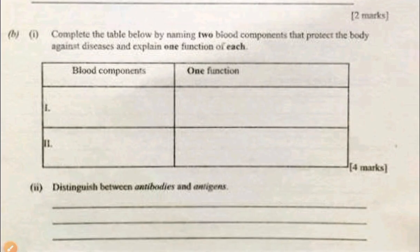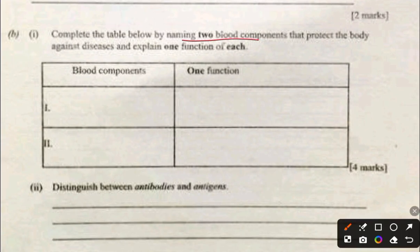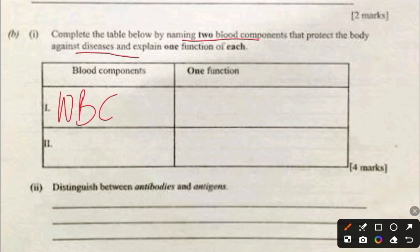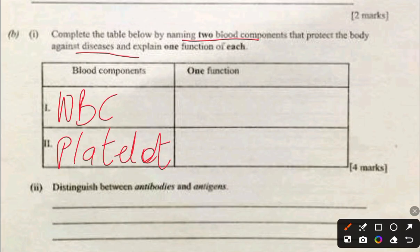Two blood components that protect the body against diseases: white blood cells (WBCs) are part of the immune system and fight biological agents by engulfing them and producing antibodies to neutralize them. Platelets also help prevent disease — when there is a cut, platelets form a clot to seal the wound and prevent microorganisms from entering.